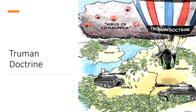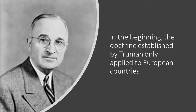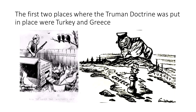Still, quite quickly, those policies also expanded to the colonized world, where conflicts emerged associated with the ideological tension between the two superpowers. The first two places where the Truman Doctrine was put in place were Turkey and Greece. These countries received military aid, and not long after, they were a laboratory for the Marshall Plan.